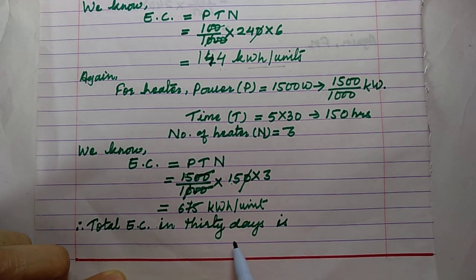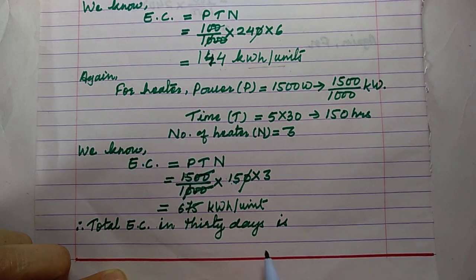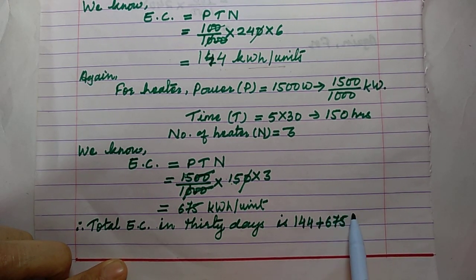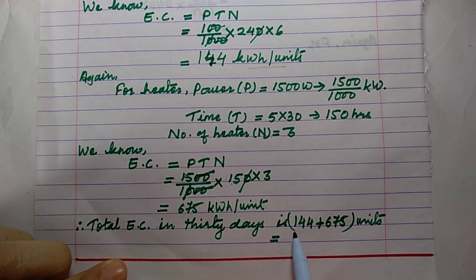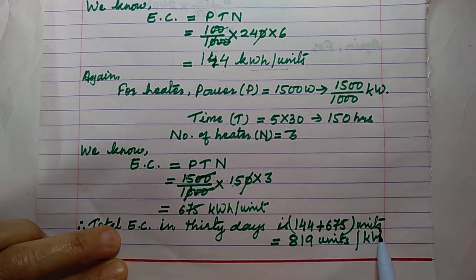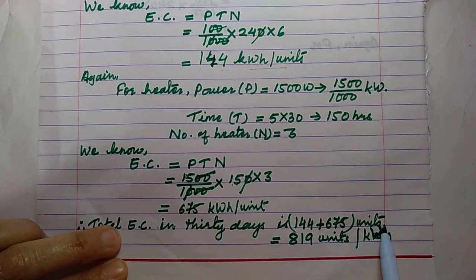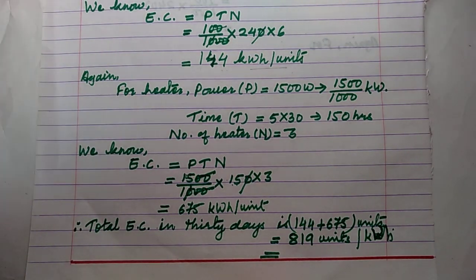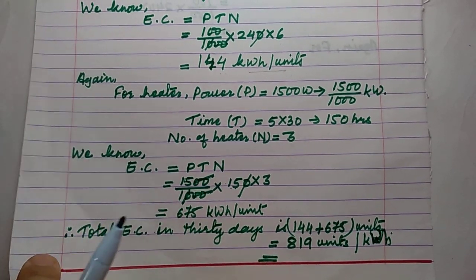Total electrical consumption in 30 days is the sum of consumption by bulbs and heaters: 144 + 675 = 819 units or kilowatt-hours. Write down the answer statement at the end. This is the solution of question number 16.